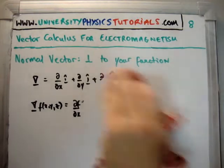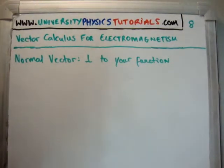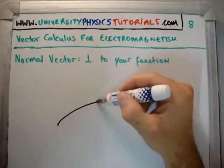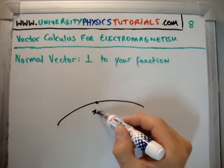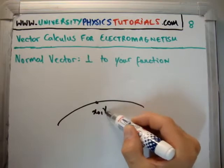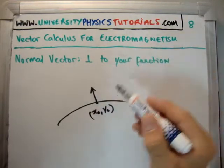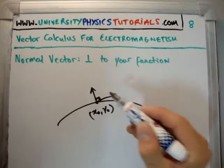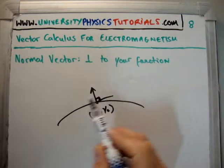What is a normal vector? Normal means perpendicular to your function. Let's say this is my function and I want to get the normal vector — you have to evaluate it at a particular point, let's call it x0, y0. The normal vector will be perpendicular to your tangent curve, or your tangent line.